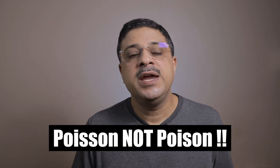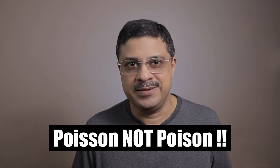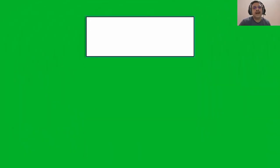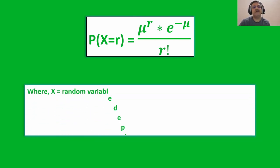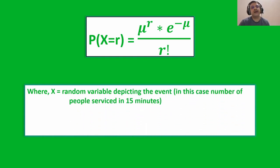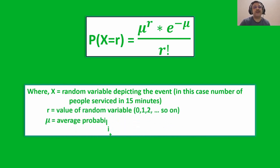Note the pronunciation — it's Poisson, not Poisson. Here is the equation for Poisson distribution. In this formula, X is the random variable depicting the event — in this case, number of people serviced in 15 minutes. R is the value of the random variable which could be 0, 1, 2 and so on. Mu is the average probability of the event, and E is Euler's number which has the value 2.718.